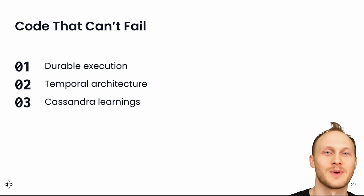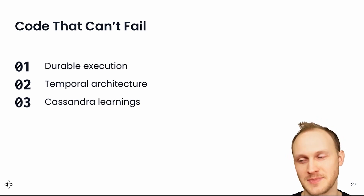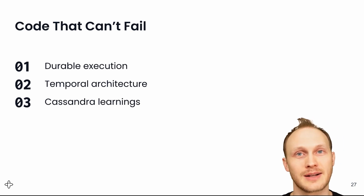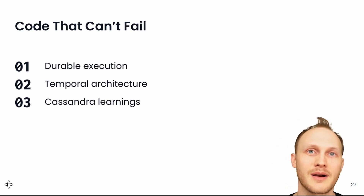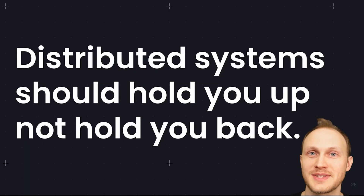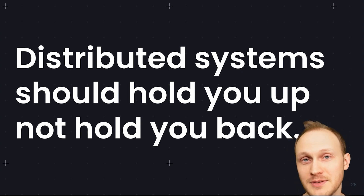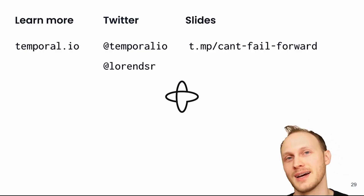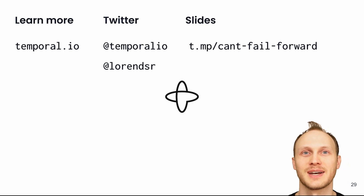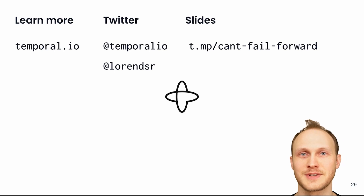To recap, we learned what durable execution is — how it's programming at a higher level of abstraction where a number of distributed systems concerns are taken care of automatically for you. We also looked at part of the internals of how that's implemented, and shared a few suggestions from our time with Cassandra. I'll end with something we like to say: distributed systems should hold you up, not hold you back. We've made software to support you in having a better development experience. If you'd like to learn more, our website is Temporal.io. I'm @lorndsr on Twitter, and happy to answer any questions. These slides are available at t.mp/cant-fail-forward. Thanks for your time.